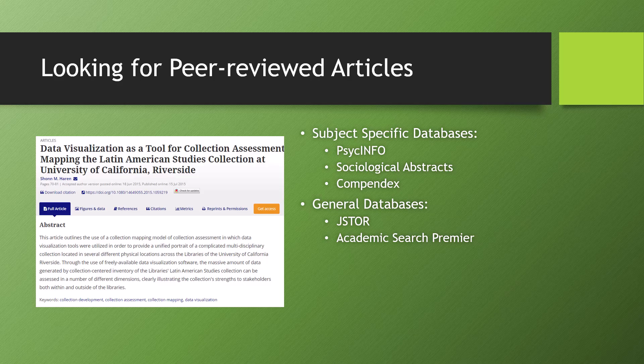If you're looking for peer-reviewed articles, you can also search for them in OneSearch, but depending on the topic, a better bet might be to seek out a subject-specific database. This is a database that only contains articles from journals in a specific discipline or group of disciplines, like psychology. Good examples of subject-specific databases include PsychInfo, Sociological Abstracts, or Compendix. On the other hand, if your research touches on a couple of different disciplines, you might want a general database like JSTOR or Academic Search Premier. These databases contain articles from journals in a wide variety of disciplines and may give better coverage when you're researching a topic that isn't easily pigeonholed into a single discipline.